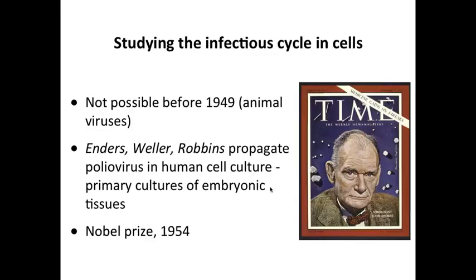It wasn't until 1949 that it was possible to study virus replication in cultured cells. John Enders and his colleagues Weller and Robbins discovered that they could propagate poliovirus in a human cell culture — specifically, they made primary cultures of embryonic tissues. You take a piece of tissue, mince it and digest it with trypsin to make single cells, plate them on a cultured dish, and then infect them with poliovirus. This was incredibly important work. It led to Jonas Salk's ability to make a polio vaccine, which was tested in 1954. Enders, Weller, and Robbins received the Nobel Prize in Physiology or Medicine in 1954 for this important discovery.